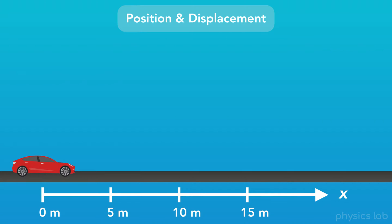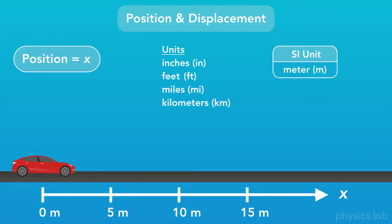In physics, we represent the horizontal position of an object using the variable x. Position could have any unit of length or distance, such as inches, feet, miles, or kilometers, but we'll be using the SI unit of position, which is meters, or lowercase m for short. As a reference, one meter is equal to about 3.3 feet, or about one yard.